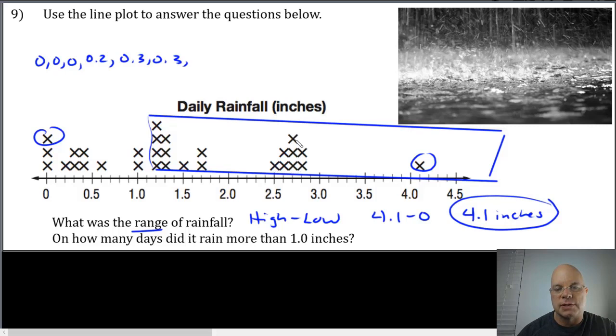Eleven, twelve, thirteen, fourteen, fifteen, sixteen, seventeen, eighteen, nineteen days with rainfall greater than one inch. Let's move on to problem number ten.